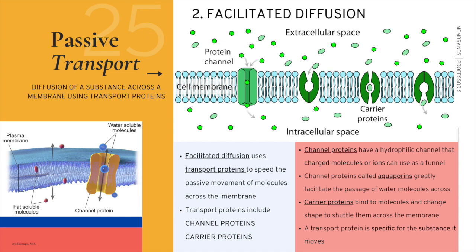Simple diffusion is unique in that it uses no transport proteins and is driven solely by concentration gradients. The second type of passive transport is facilitated diffusion, which does use proteins to aid in transport but still does not require energy. In facilitated diffusion, transport proteins speed the passive movement of molecules across the plasma membrane. The two types are channel proteins and carrier proteins.